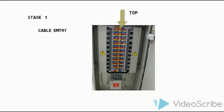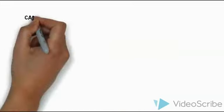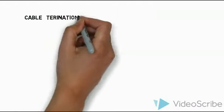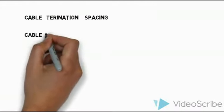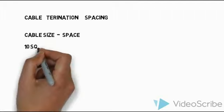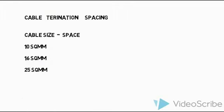Stage 3 is Outgoings. Outgoings are in LVS. The Incoming and Outgoings are in LVS. In this case, you can align the Cable Termination of Spacing.